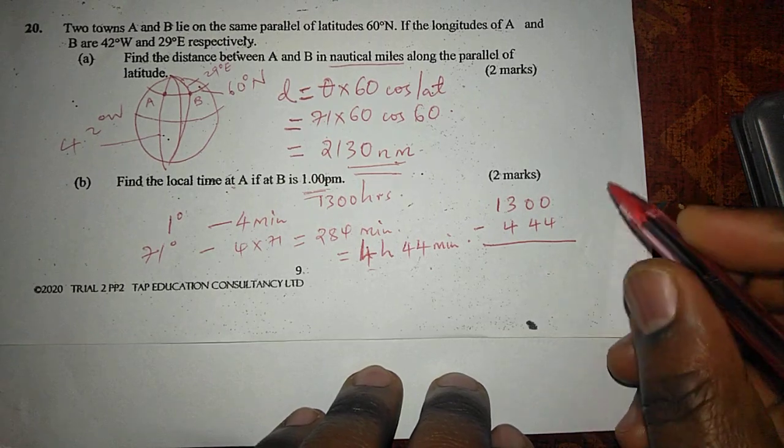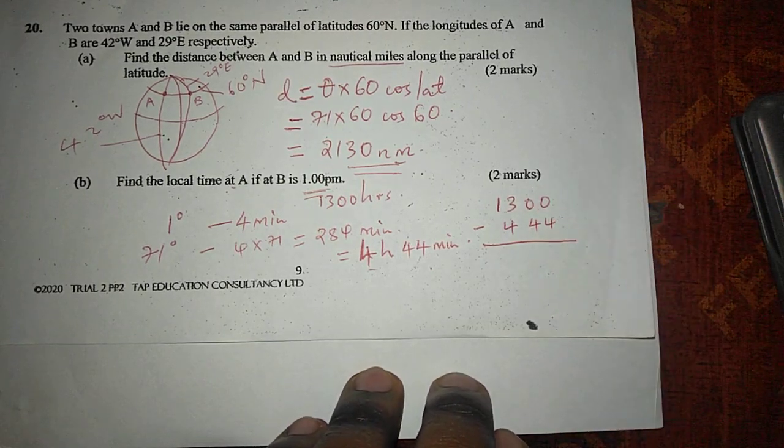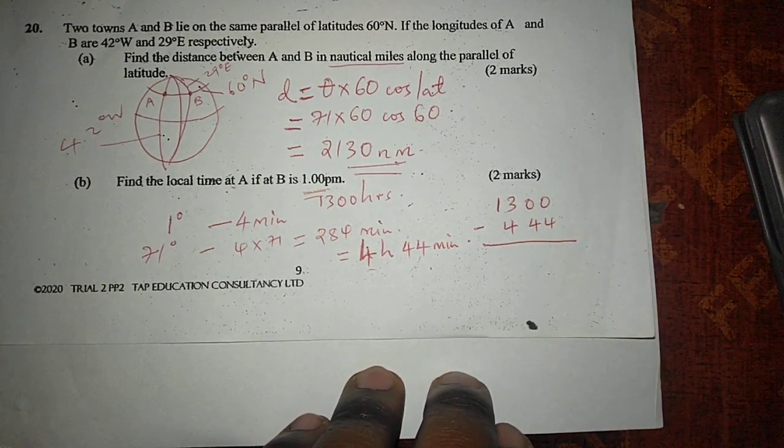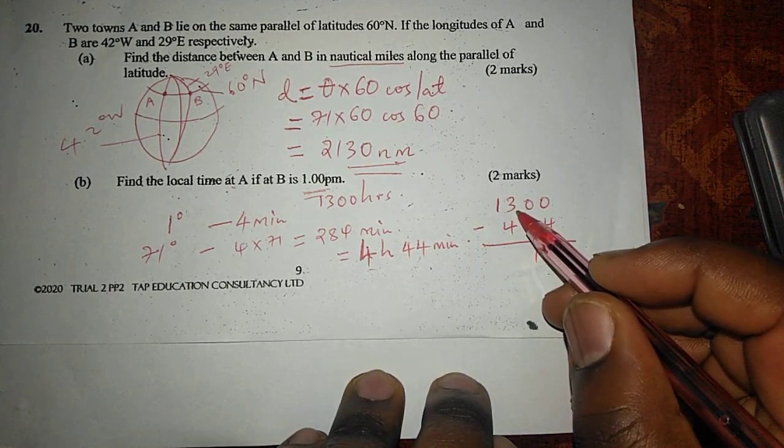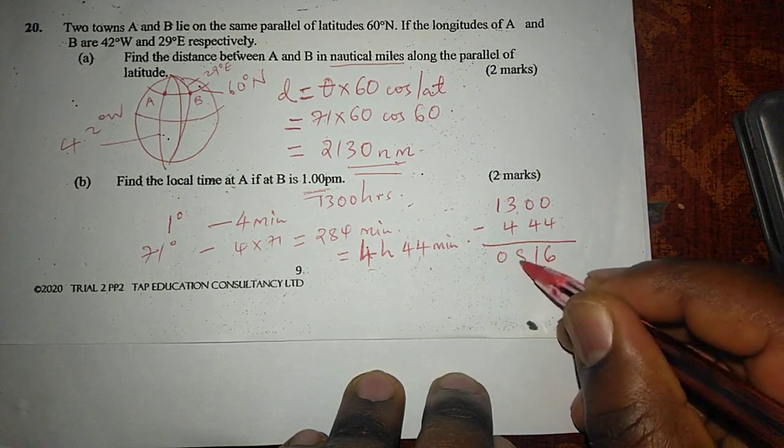So the local time at A will be, when we carry an hour here, this will be 60 minus 44, giving us 16 minutes. And because we've borrowed an hour here, this will be 12 minus 4, which will be 8.